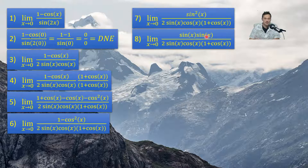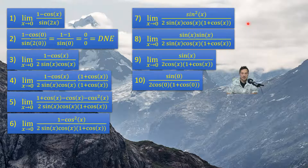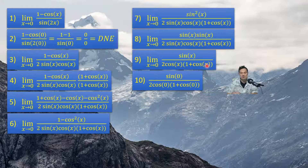Then maybe you can predict the next step. Step number 9, relative to 8, is simplified because I take the sin x on top and cancel with the sin x in the bottom. So now in the top of step 9, I have only a single sin x. And in the bottom, I have 2 cos x multiplying 1 plus cos x.